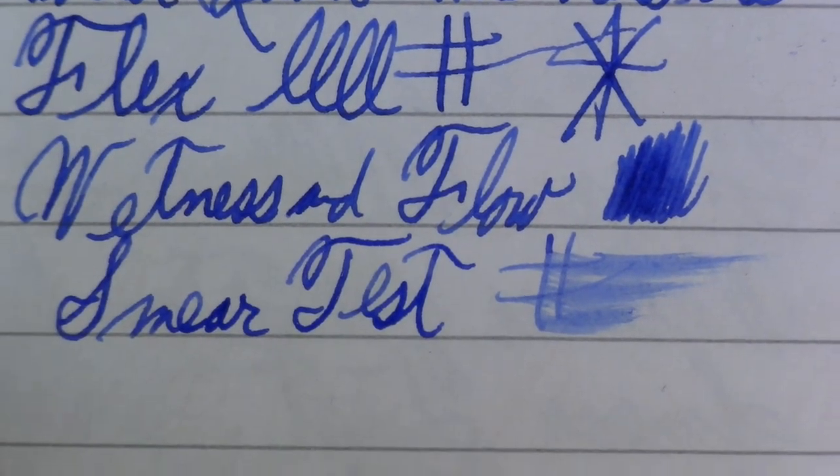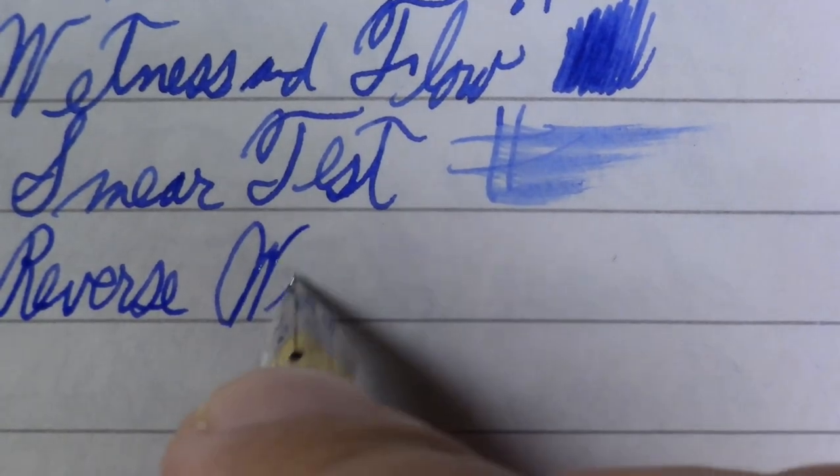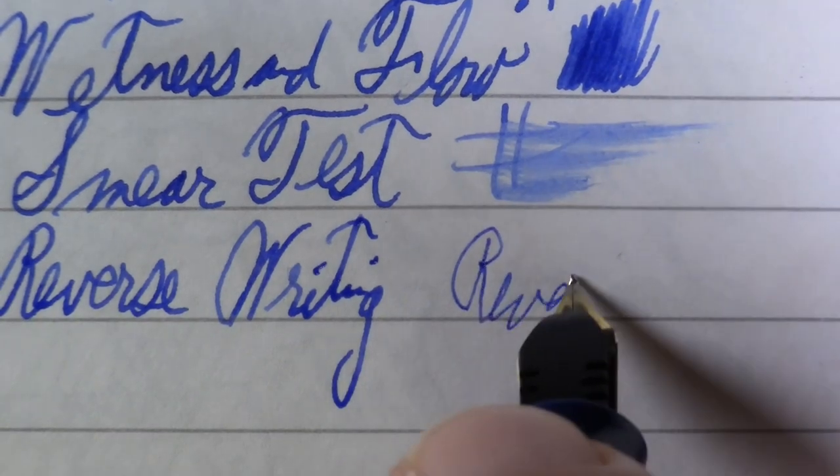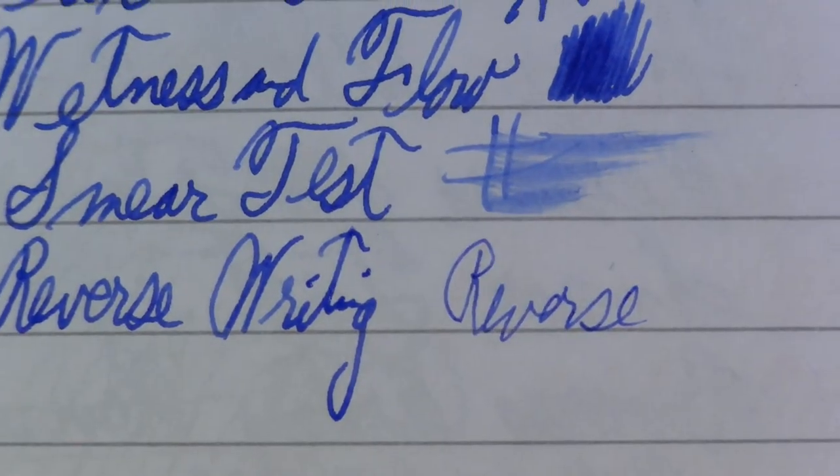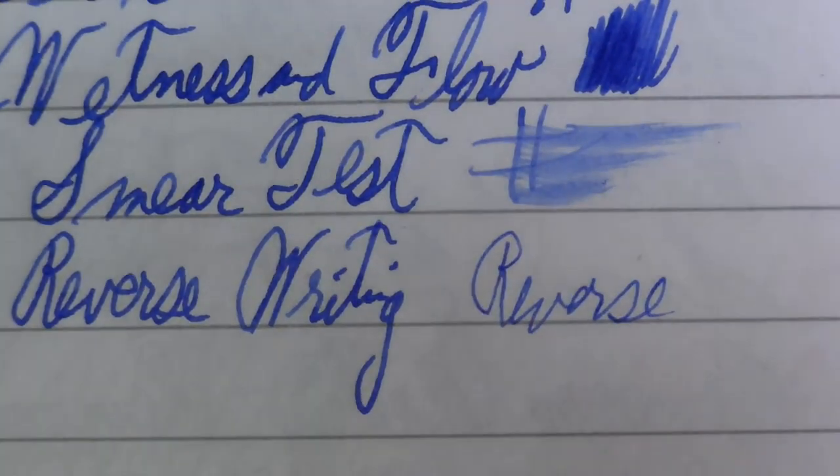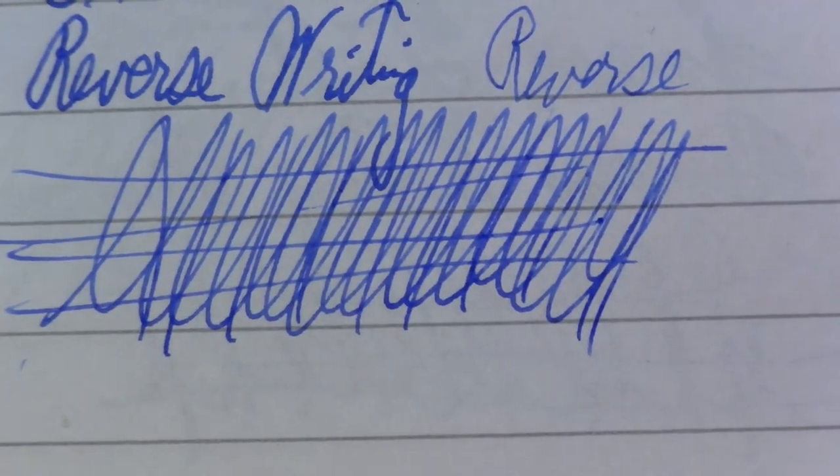Wetish. Reverse writing. Kind of scratchy, definitely an extra fine or ultra extra fine. And finally, the world famous peer Gustafson test. You don't press down during this test, which is why it's making an extra fine line, but I'd say it passed with flying colors.